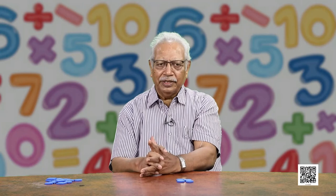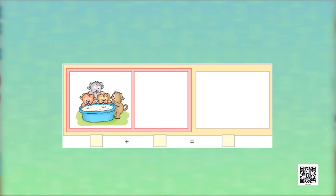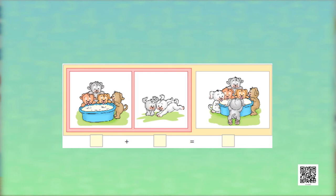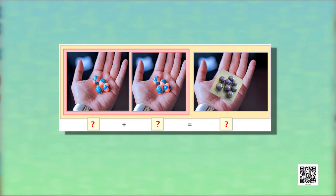This becomes the mathematical statement from visual questions. 4 puppies plus 2 puppies is equal to how many? Yes, 6 puppies. And what will be the mathematical statement? 4 plus 2 is equal to 6. Similarly, we can talk about the marbles. You can count the marbles in one child's hand and count the marbles in the second child's hand and find out how many both of them have. Look at these pictures carefully, count them, add them and try to find out the answers yourself.